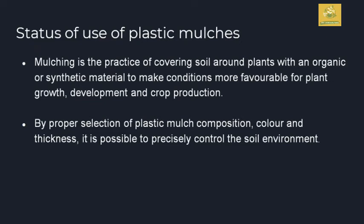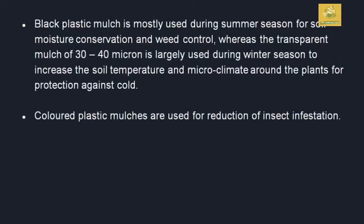Plastic mulching is the practice of covering soil around the plant with an organic or synthetic material to make conditions more favorable for plant growth, development, and crop production. Plastic mulches are very commonly used, and proper selection of plastic mulch composition, color, and thickness makes it possible to precisely control the soil environment. Black plastic mulch is mostly used during the summer season for soil moisture conservation and weed control. Transparent mulch of 30 to 40 microns is largely used during winter to increase soil temperature and protect microclimate around plants. Colored mulches are used to reduce insect infestation.